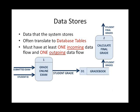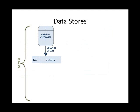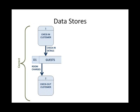Let's see some correct examples. I have a process called 'check-in customer' in a hotel. I have the check-in details — the customer's name, etc. — and I save it in the 'guests' data store. Notice that, similar to database tables, the name of the data store is a plural noun. Later, when the customer checks out, I take from this store the room charges saved by other processes and use it for the 'checkout customer' process, and I can save the total bills back into the guests data store.